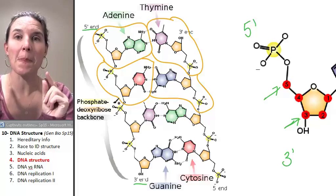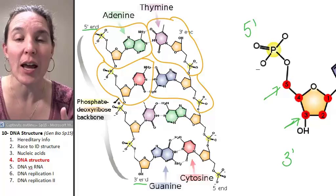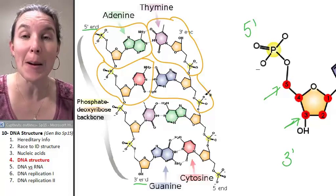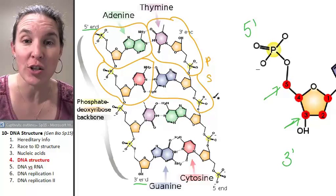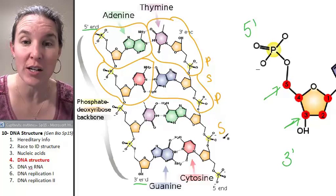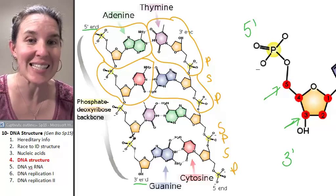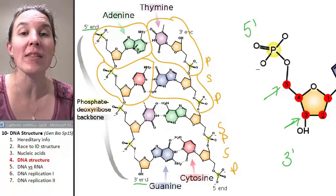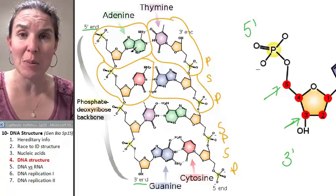In the double helix, it's like a ladder, and you have a sugar-phosphate backbone. Here is a phosphate, here is a sugar, here is a phosphate, here is a sugar — and so on. Same thing on the other side. And then we've got these ladder rungs, which are the nitrogen bases.